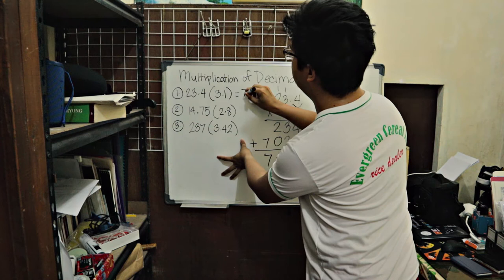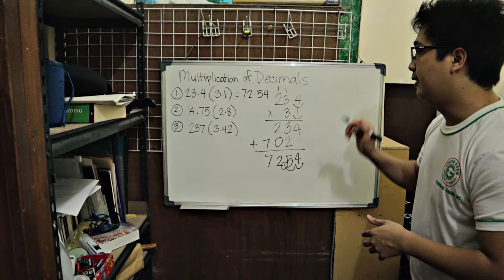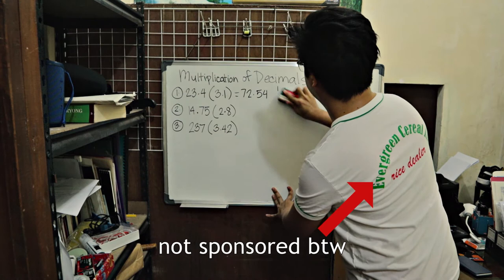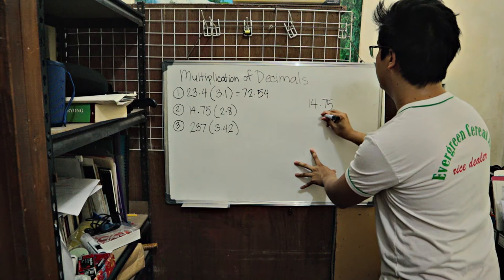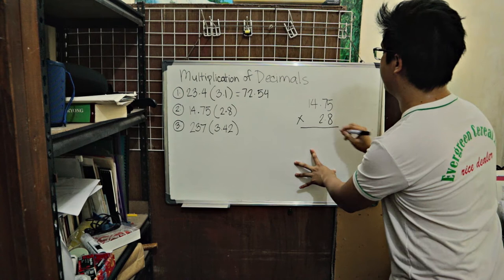So the answer is 72 and 54 hundredths. Let's try others. I-erase. Try 14.75 times 2.8. 14.75. Align starting from the rightmost digit. So this is 2.8. And then we will multiply.